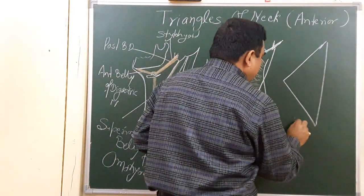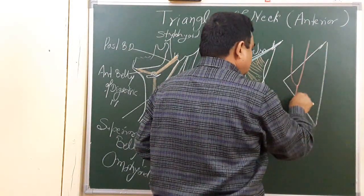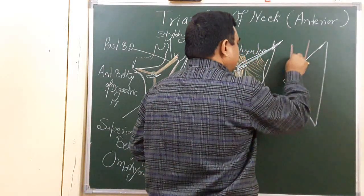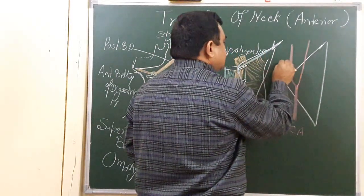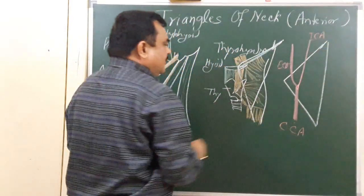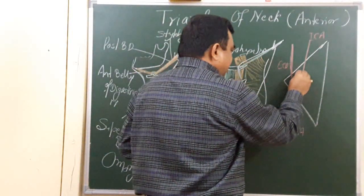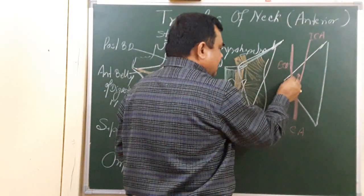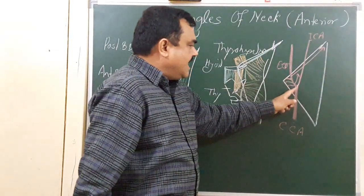Here is the common carotid artery, which divides into the internal carotid artery and the external carotid artery. The external carotid artery gives five branches here in this triangle: ascending pharyngeal, superior thyroid, lingual, facial, and occipital. These are the five branches present within this triangle.